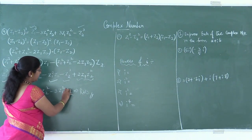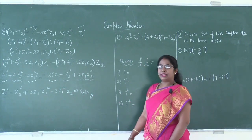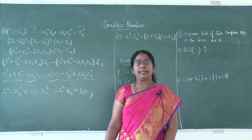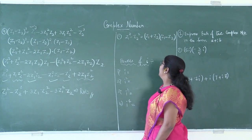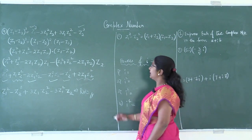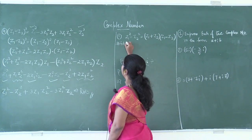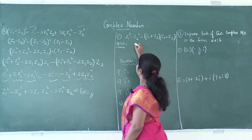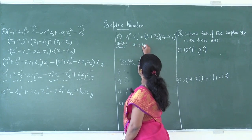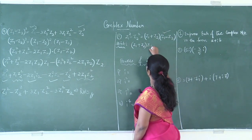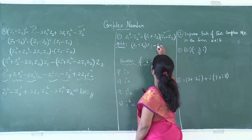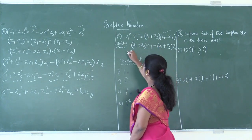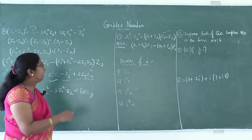The next identity: z1² − z2² = (z1 + z2)(z1 − z2). I'll give a hint — you can try this at home. Multiply the first term z1 by (z1 + z2), then multiply the second term z2 by (z1 − z2), and verify.